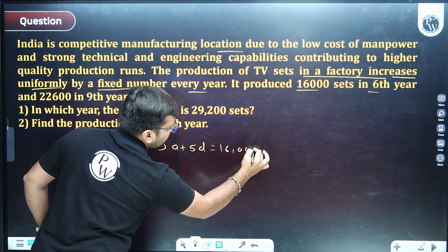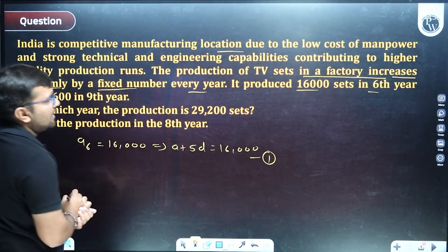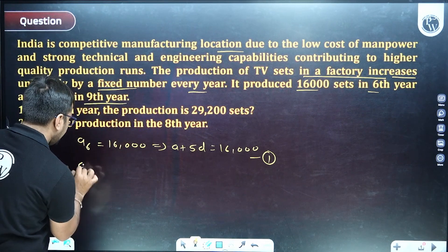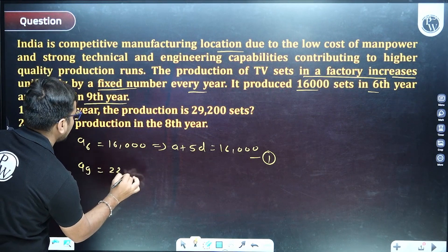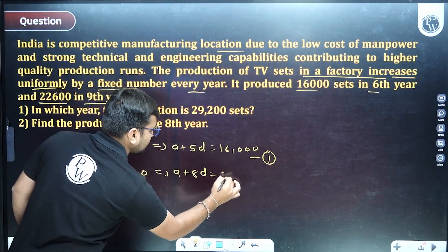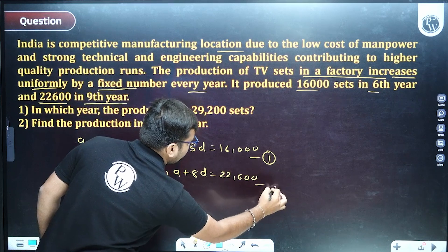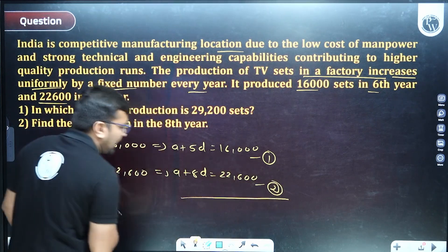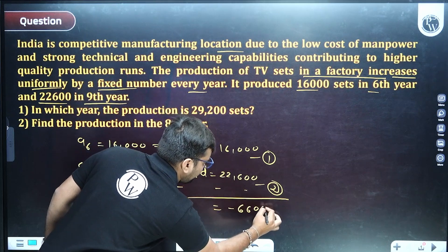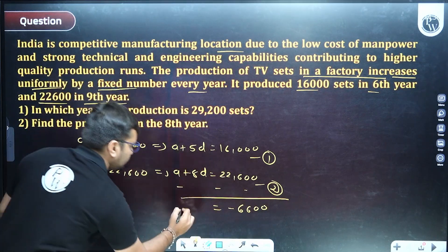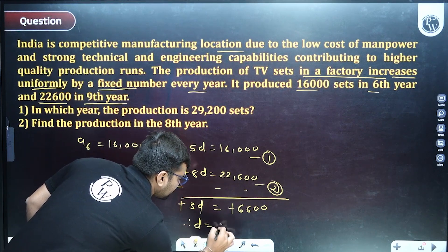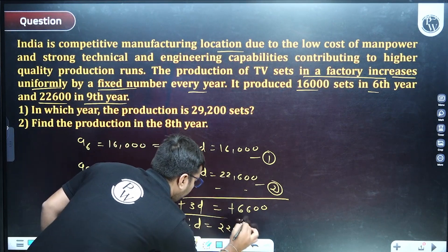For the ninth year, production is 22,600, so a9 = 22,600, giving us: a + 8d = 22,600. This is equation number two. Using the elimination method — subtracting equation one from two — we get: −6,600 = −3d, which simplifies to d = 2,200. So the common difference is 2,200.